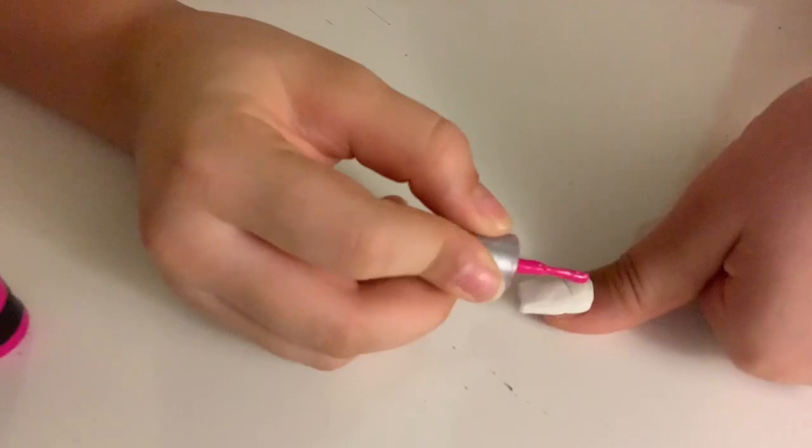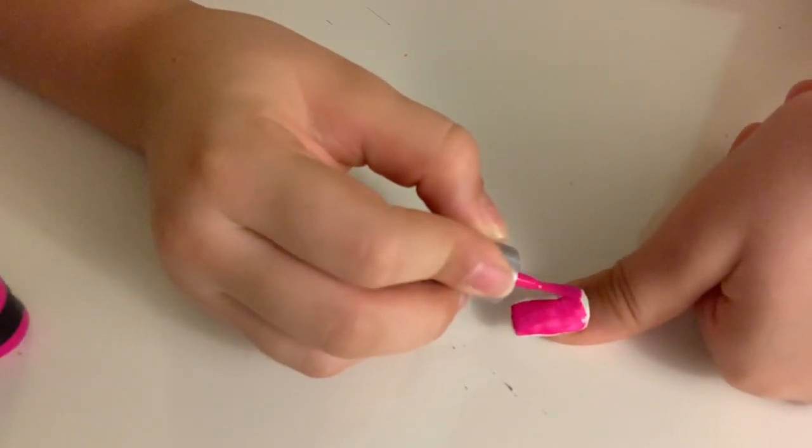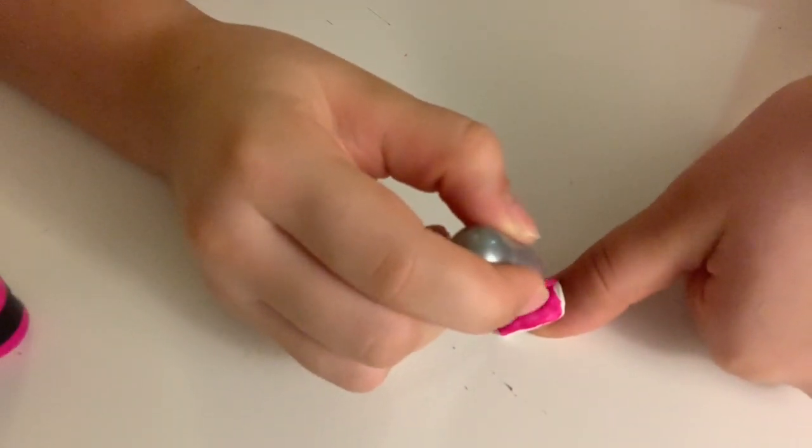I'm going to take some nail polish. I chose peel-off just because it's easier to work with and dries quicker. I do have real nail polish. Peel-off is super easy to work with. You're just going to paint it on your clear nail.